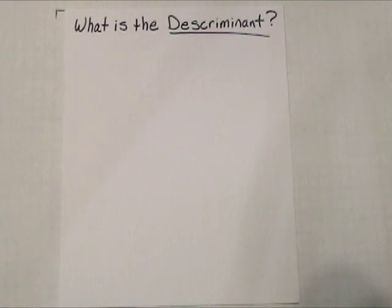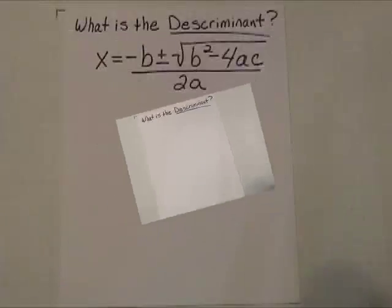Okay, so what is the discriminant? Well, it turns out that the discriminant is a little piece of our famous quadratic formula. Let's take a look.